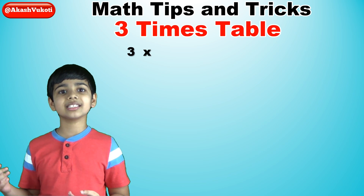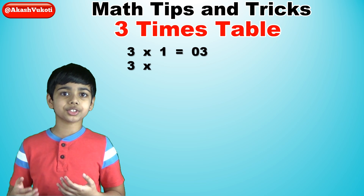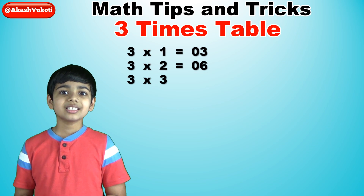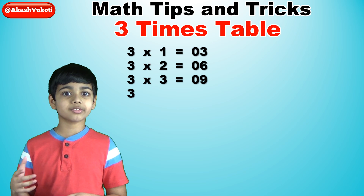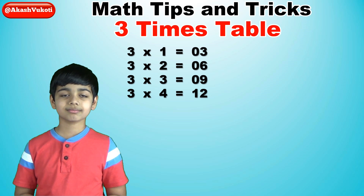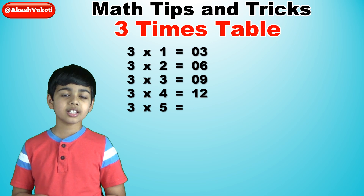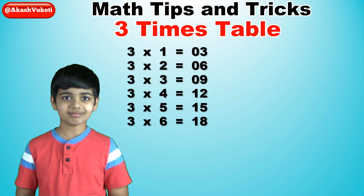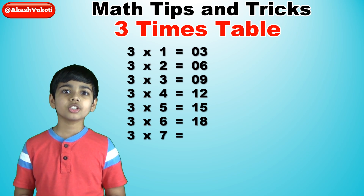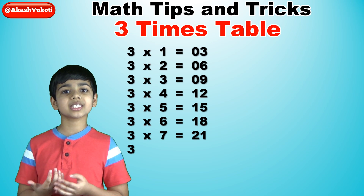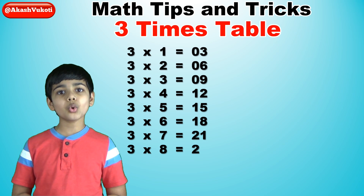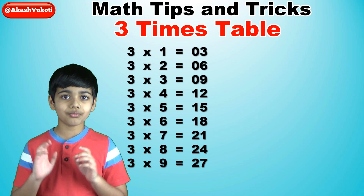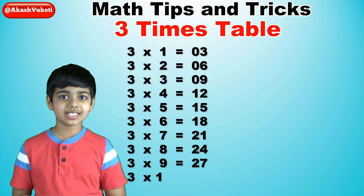Three times one is three. Three times two is six. Three times three is nine. Three times four is twelve. Three times five is fifteen. Three times six is eighteen. Three times seven is twenty-one. Three times eight is twenty-four. Three times nine is twenty-seven. And finally, three times ten is thirty.